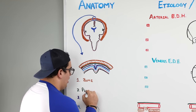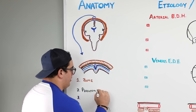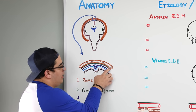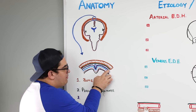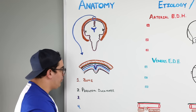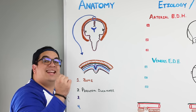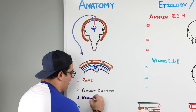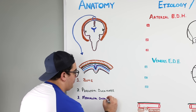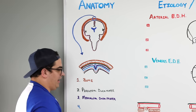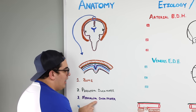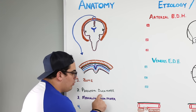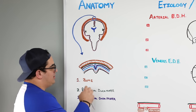There is a space between the periosteal layer of the dura mater and the next layer — a purple layer — which is called the meningeal layer of the dura mater. There's a potential space that exists between the periosteal layer and the meningeal layer of the dura mater, and that is called the epidural space. That is where the blood will accumulate.